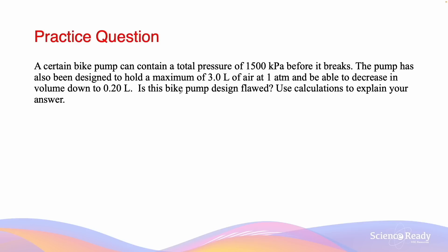So when the bike pump decreases in volume from 3 liters to 0.2 liters, the pressure will have inversely increased. We can use the relationship P1V1 equals P2V2 again to calculate the new pressure. The initial volume is 3 and the initial pressure is 1 atm. The new volume is 0.2 liters, so we need to work out what the new pressure is going to be. P2 must equal 3 divided by 0.2 atm which equals 15 atm.